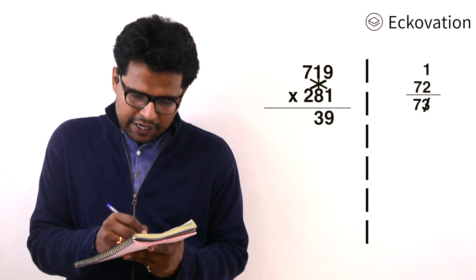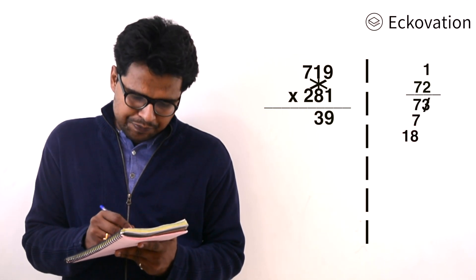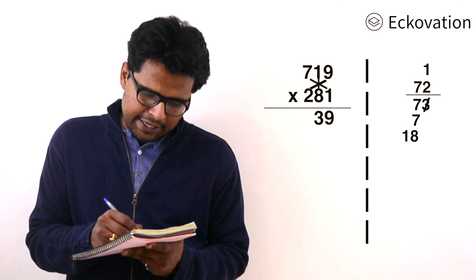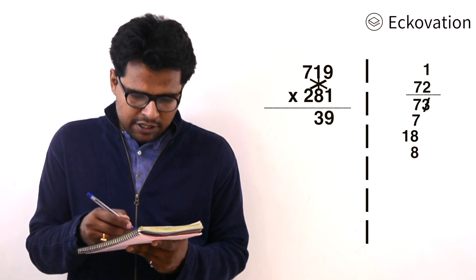We have 7 already from the previous step. 1 into 7 is 7, 2 into 9 is 18, and 1 into 8 is 8. Now we are going to sum 7 plus 7, 18, and 8. This comes to 40. We'll write 0 and carry 4.